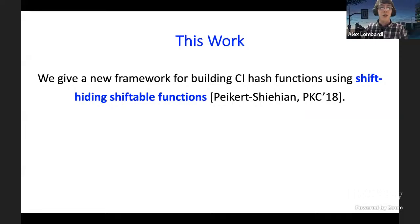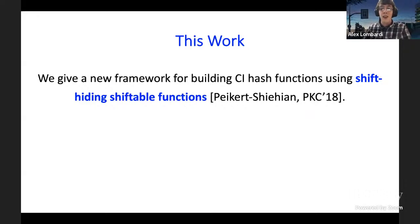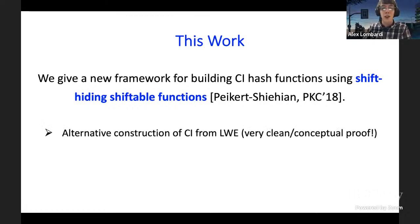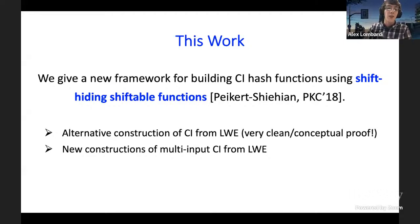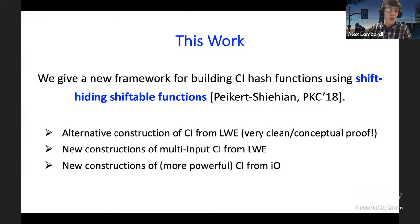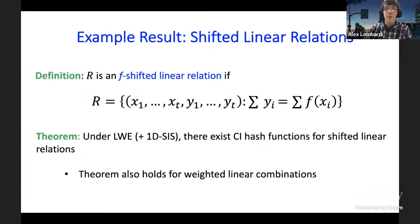In this work we give a new framework for building correlation tractability using shift hiding shiftable functions — an object from crypto previously introduced by Peikert and Shiehian to build constrained PRFs. Our framework gives a new, extremely simple construction of single-input correlation tractability for functions from LWE, and new flavors of multi-input correlation tractability from LWE and additionally from obfuscation.